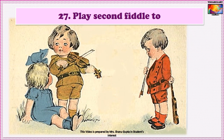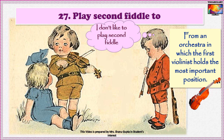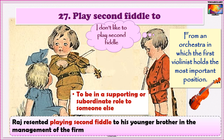The 27th idiom is To play second fiddle to someone. Fiddle is another name for the stringed musical instrument more often called a violin. The phrase comes from an orchestra in which the first violinist holds the most important position. So to play second fiddle to someone means to be in a supporting or subordinate role to someone. For example: Raj resented playing second fiddle to his younger brother in the management of the firm.